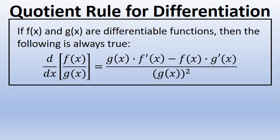Unlike the product rule, the quotient rule involves a difference, making the order of the terms in the numerator very important.